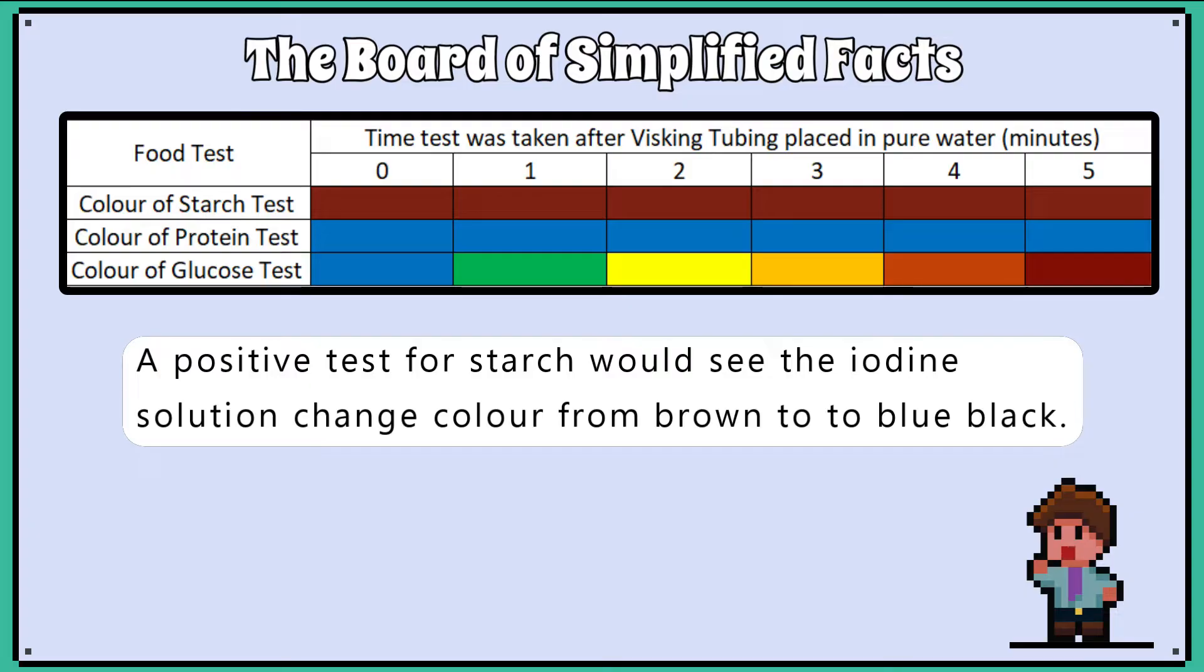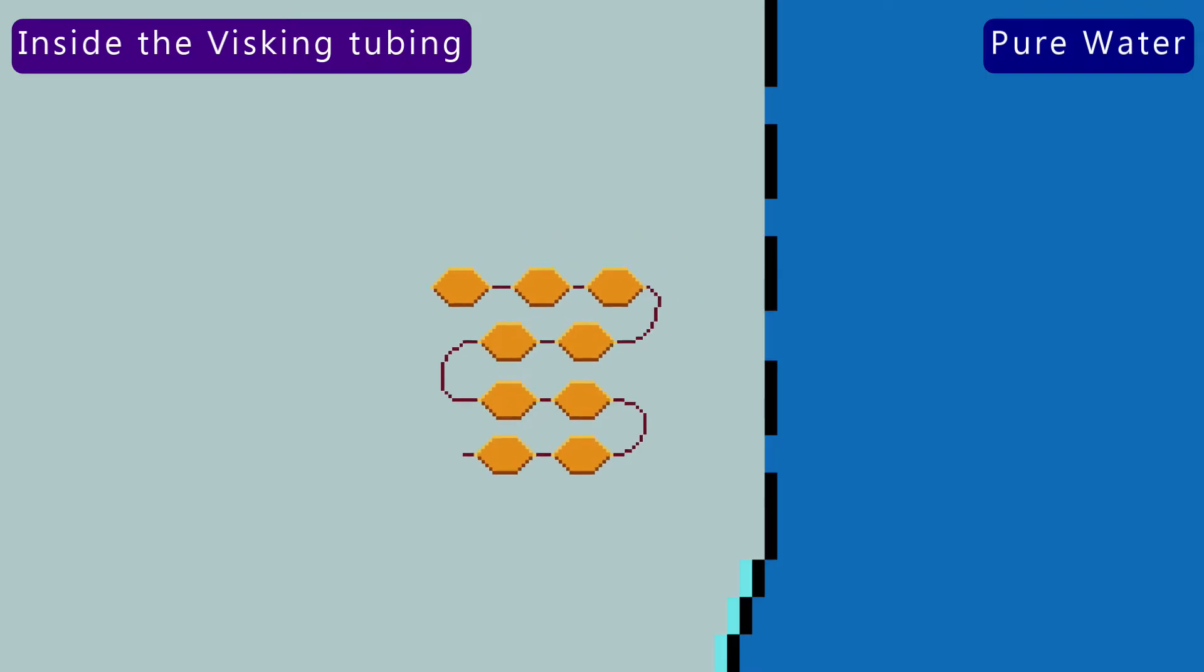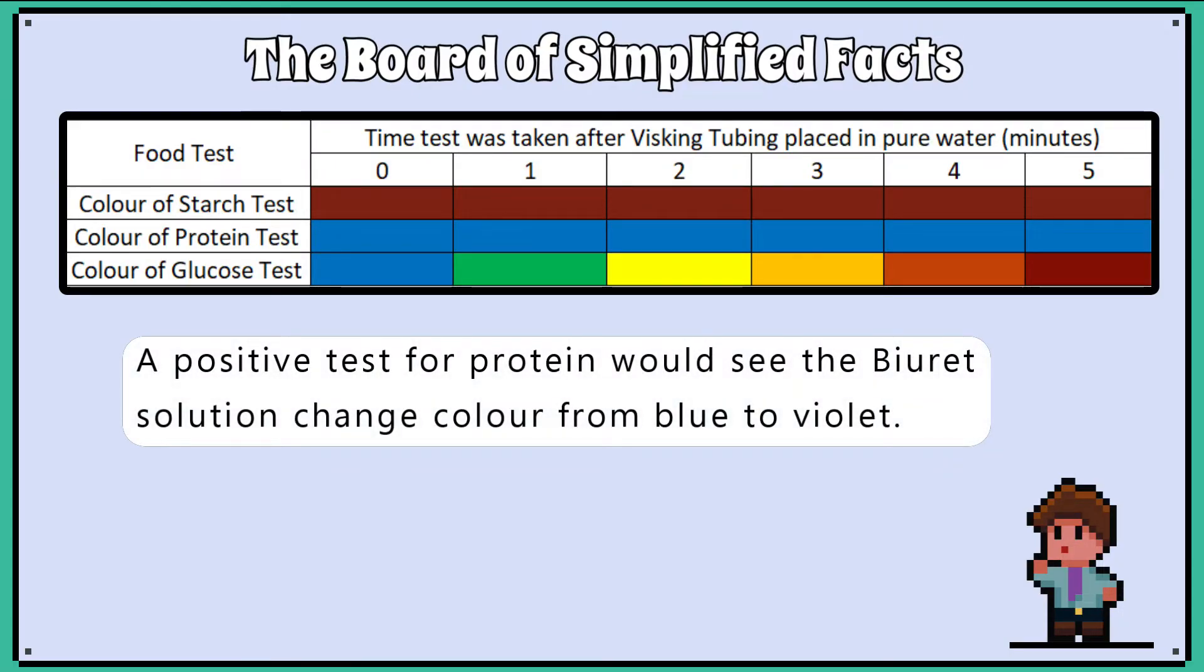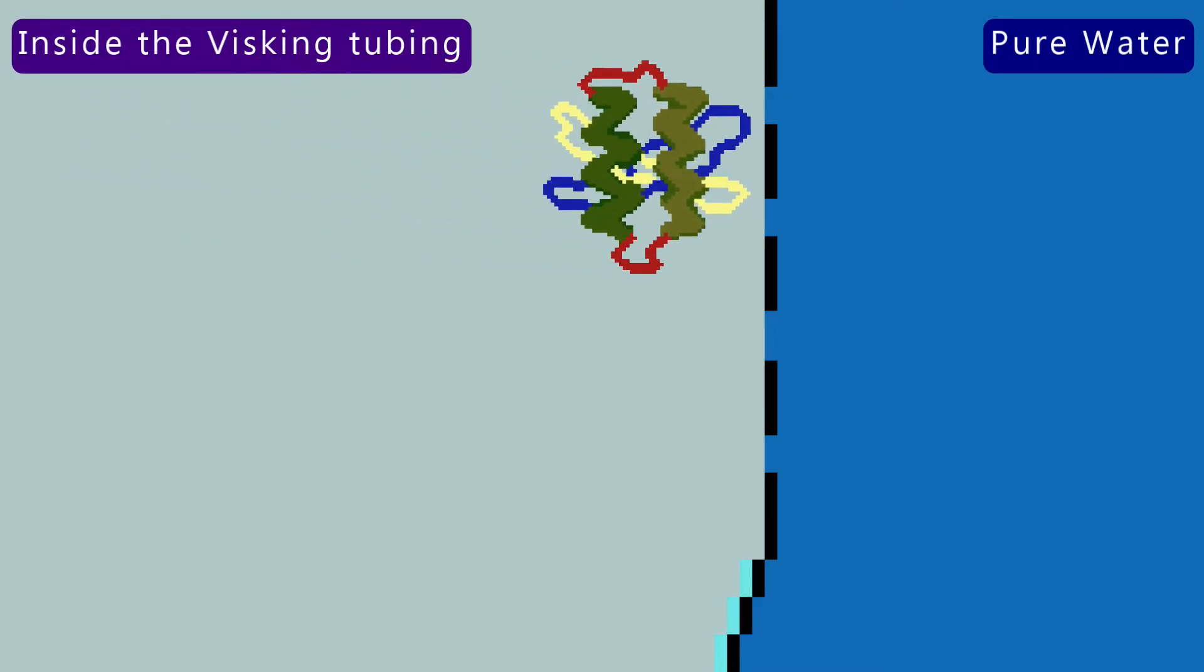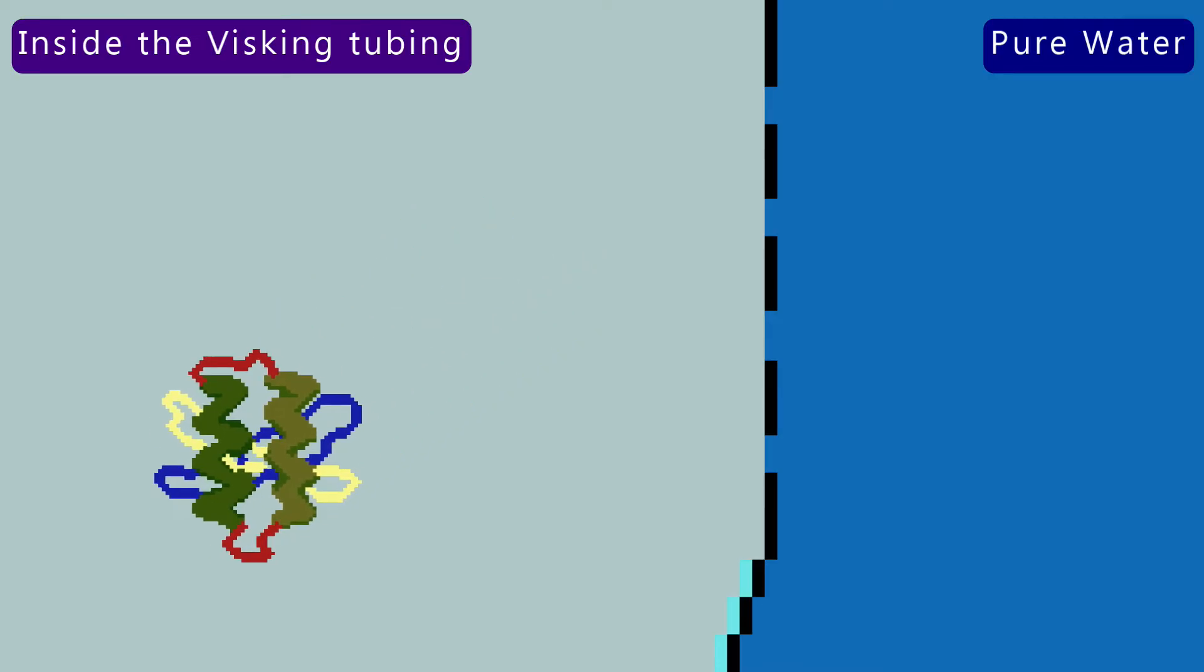The starch test is negative each time because the starch molecules are too large to fit through the pores of the semi-permeable membrane of the visking tubing. The test for protein also remains negative each time because again the protein molecules are too large to fit through the pores of the semi-permeable membrane of the visking tubing.